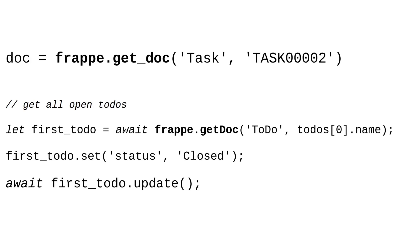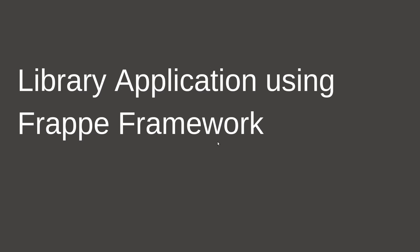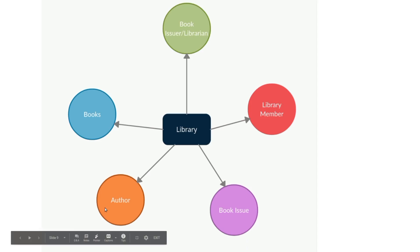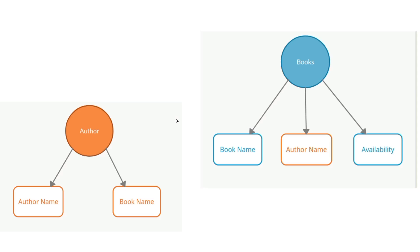Consider building a library application using the Frappe framework. A library consists of books, authors, library members, and a book issuer. We'll also create a document storing the issue date, which book is issued, and to whom. Since doc type is the building block, Books, Book Issue, Library Member, and Author are all doc types that come together to build the library application.